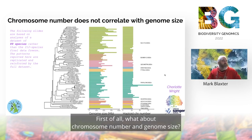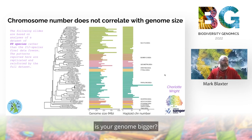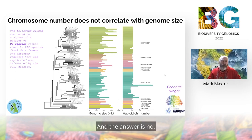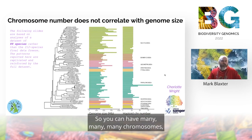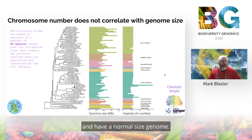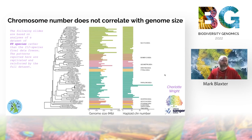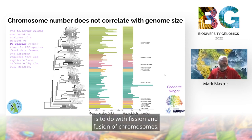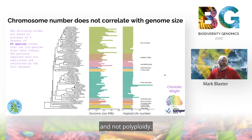First, what about chromosome number and genome size? If you have more chromosomes, is your genome bigger — are organisms with more chromosomes polyploid, perhaps? The answer is no. You can have many, many chromosomes and have a normal sized genome. So most of the chromosome number change is to do with fission and fusion of chromosomes and not polyploidy.